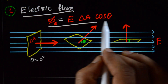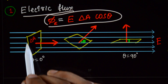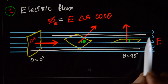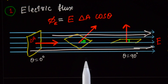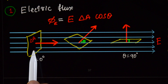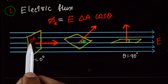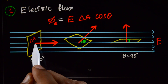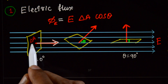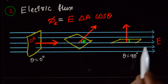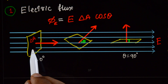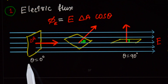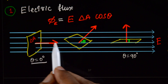Suppose this is a frame, and this is the flow of water. Hold this frame in the direction of the flow of water — the area vector of the frame and the direction of flow of water are in the same direction. You can see the maximum amount of water can flow through this area when the angle between the direction of flow of water and the area vector is zero.